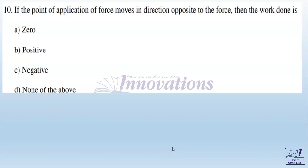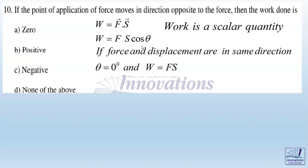Next problem: If the point of application of a force moves in direction opposite to the force, then the work done is? First of all, work is the dot product of force vector and displacement vector: W equals F dot S. The dot product is a scalar product. If F is the magnitude of force, S is the displacement magnitude, and theta is the angle between force and displacement vector, then work is a scalar quantity.